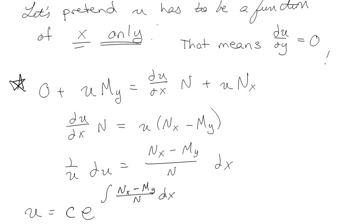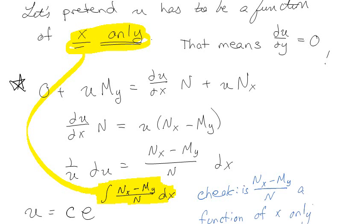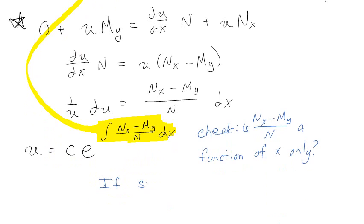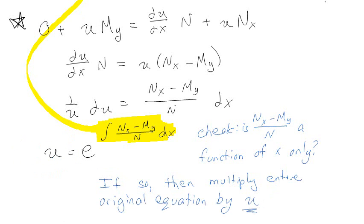We said that u was going to be a function of x only. So that means that (Nx - My)/N also has to be a function of x only. What we're going to do is check: after we verify the equation isn't exact, we check whether (Nx - My)/N is a function of x only. If so, we multiply the entire original equation by u, where u equals e to that integral. We don't worry about the constant because it cancels out anyway.